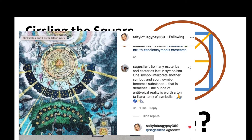One ounce of antitypical reality - in other words, what does this symbol stand for? One ounce of antitypical reality is worth a ton, a literal ton of symbolism. And Salty Lotus Gypsy said, agreed.